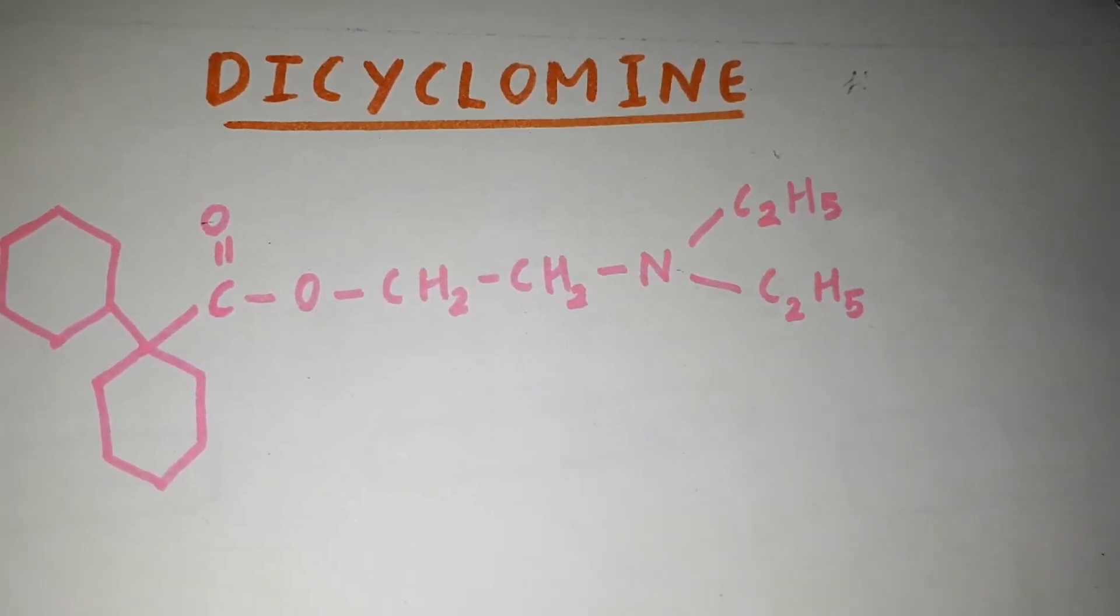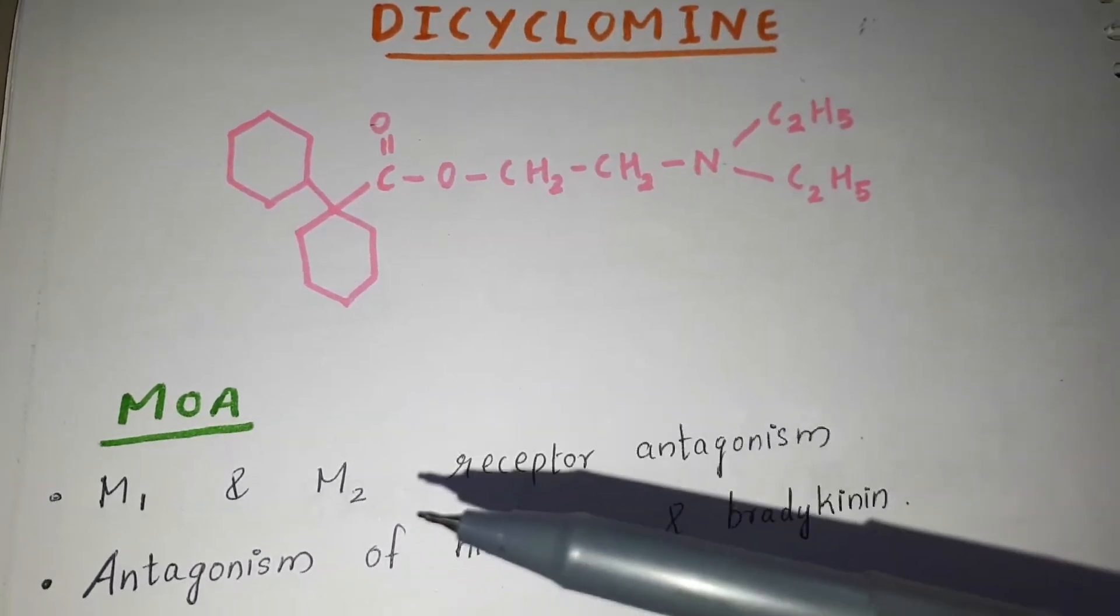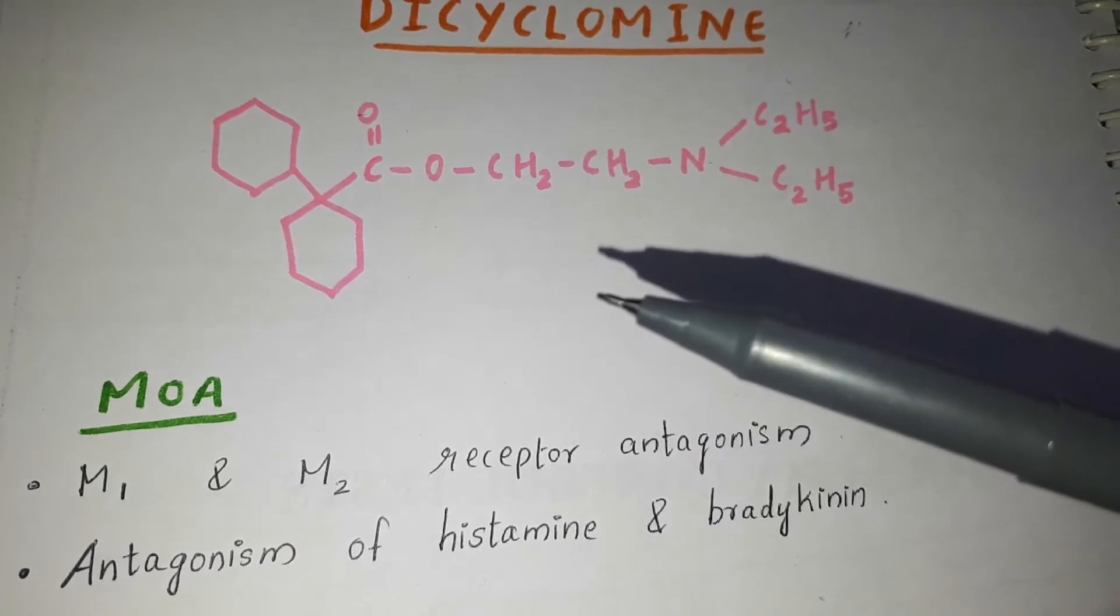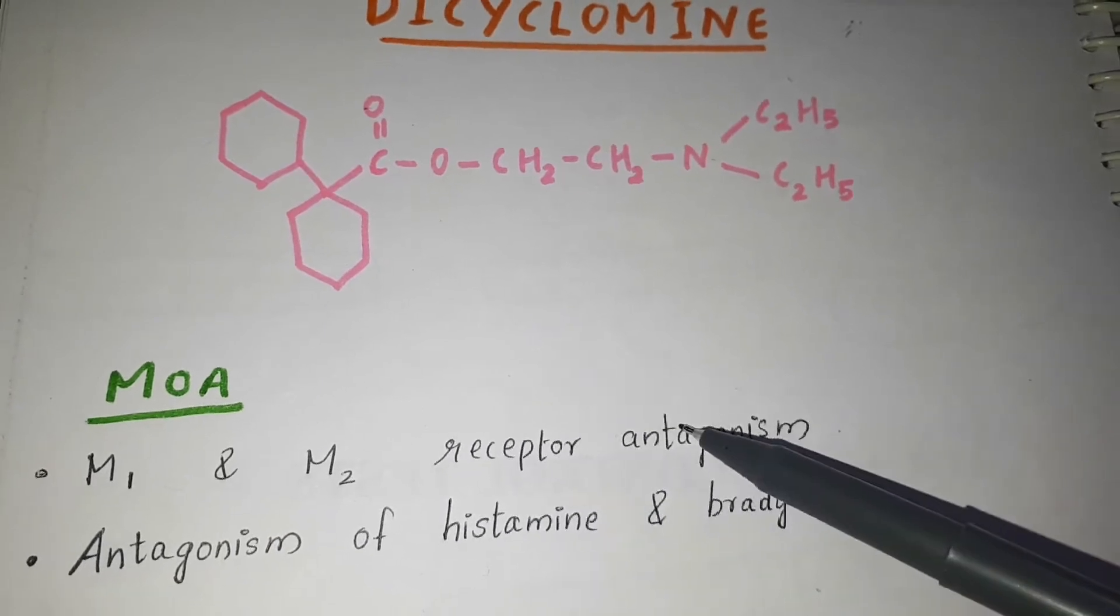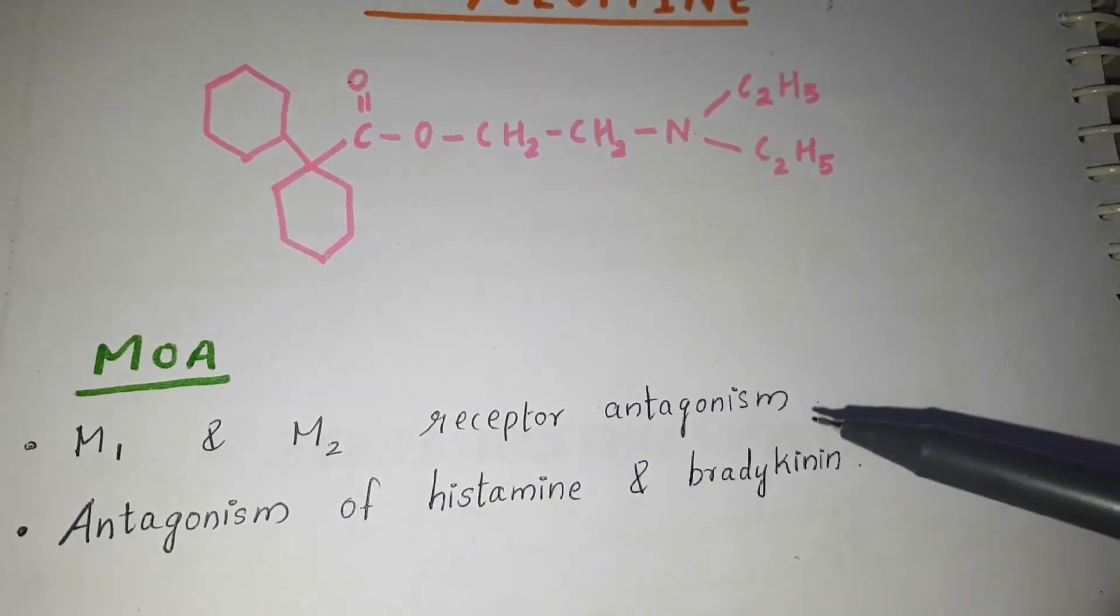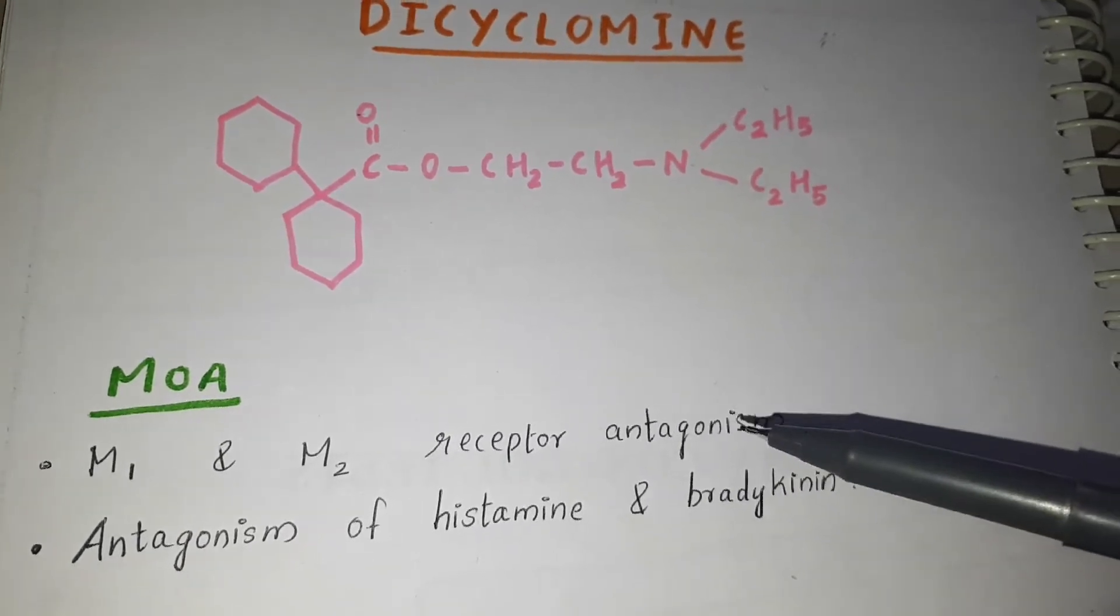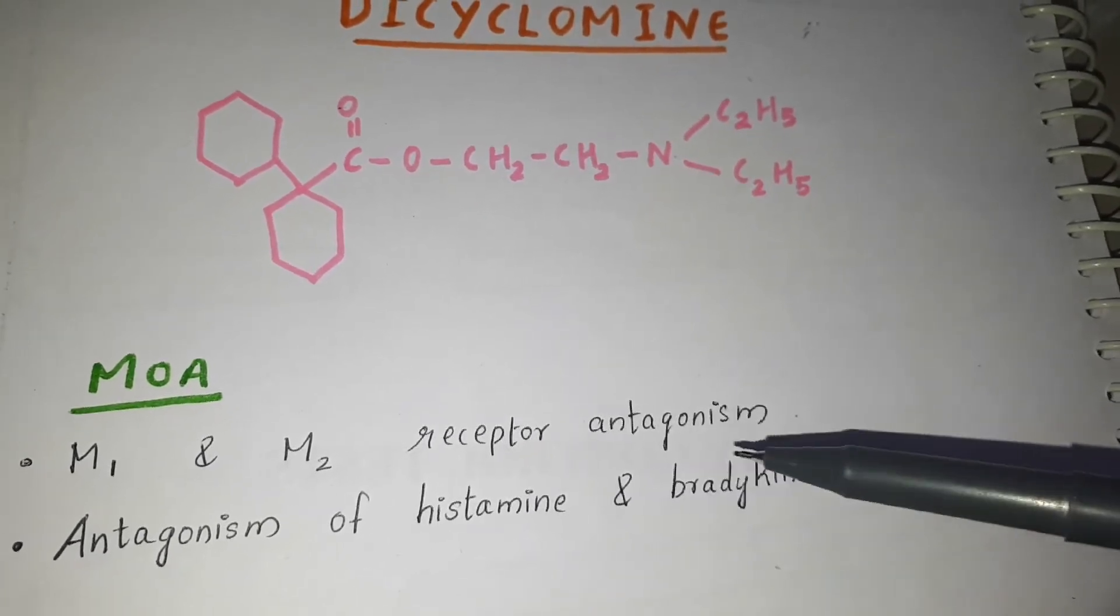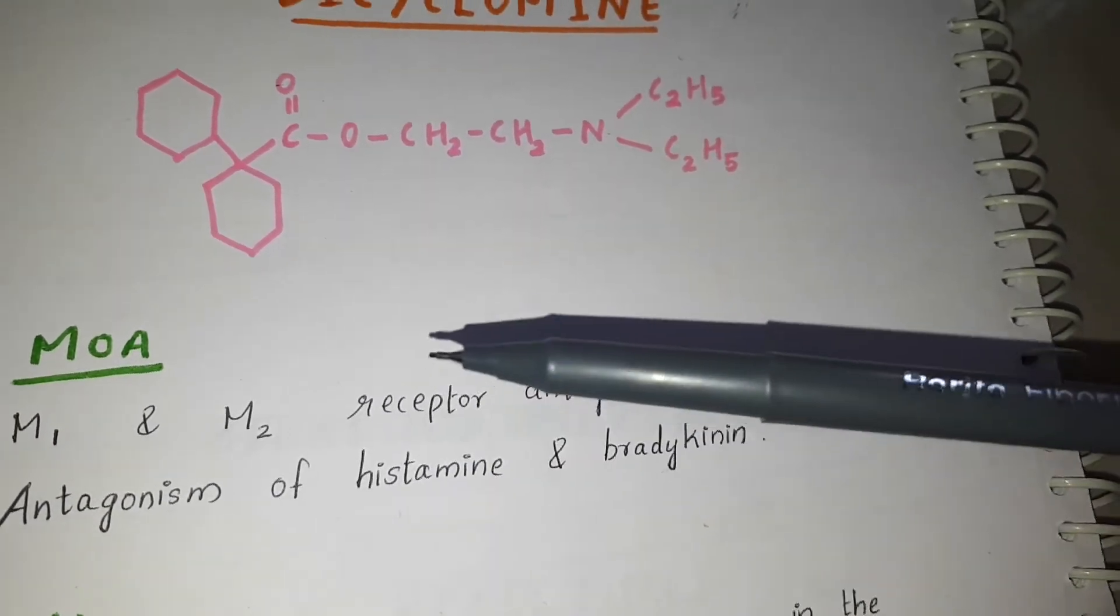Let's take a look at the mechanism of action of dicyclomine. It has partial antagonism of muscarinic receptors, anti-muscarinic activity with M1 and M2 receptor antagonism, and also partial antagonism of histamine and bradykinin. These are the two important actions: anti-muscarinic activity and antagonism of histamine and bradykinin. It blocks the M1 and M2 receptors.